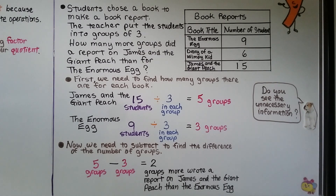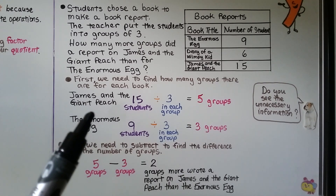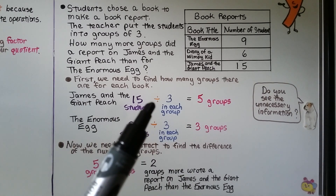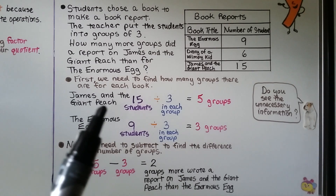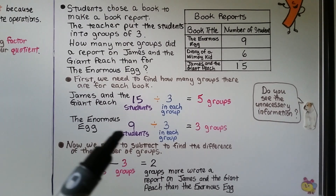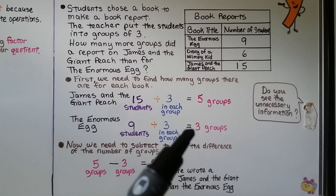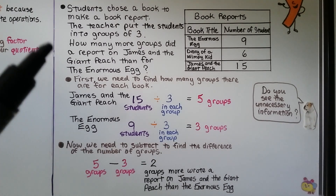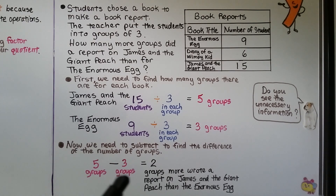We need to find how many groups there are for each book. There are 15 students in groups of 3 for James and the Giant Peach: 15 divided by 3 equals 5 groups. For the Enormous Egg, there are 9 students: 9 divided by 3 equals 3 groups. We needed to find how many more groups did a report on James and the Giant Peach than the Enormous Egg. We subtract to find the difference of the number of groups.